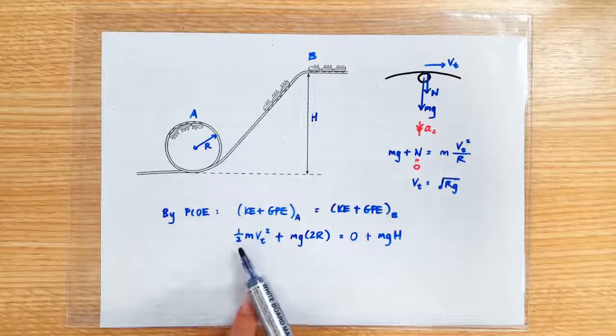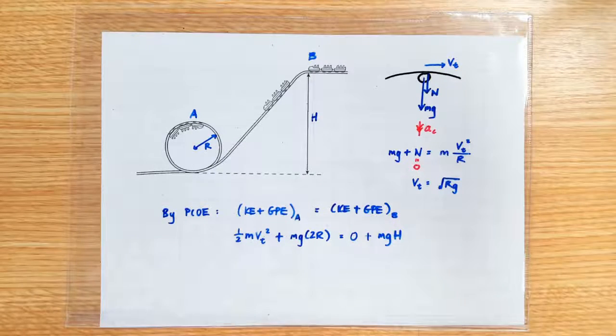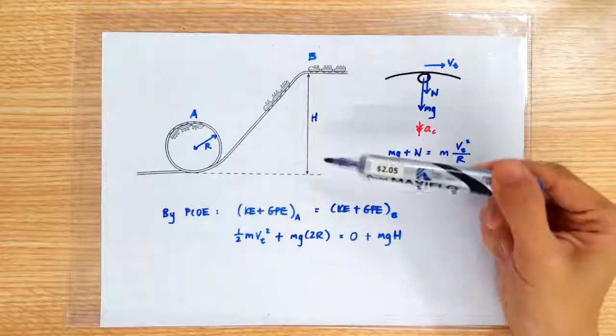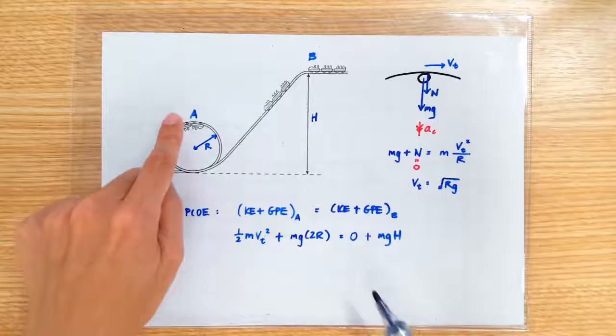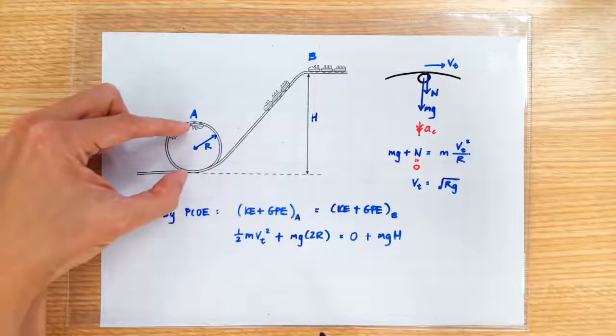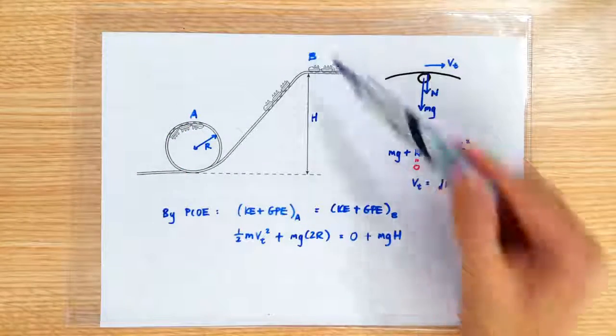If we take the reference point for GP to be zero here, then the GP at A will be mg2r and the GP at B will be mgH.